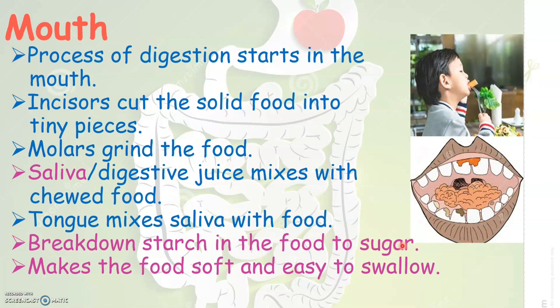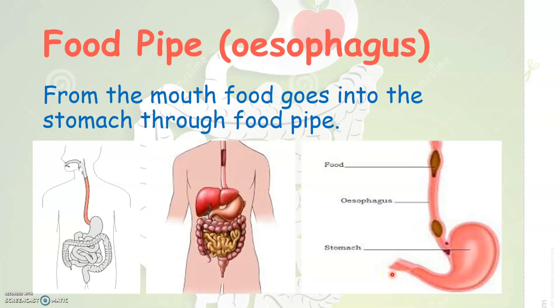We have already learned that only if the food is converted into a simple form can it be absorbed by our body. Saliva also makes the food soft so it can easily be swallowed. After we chew and swallow the food, from the mouth it goes through the food pipe. As you see in the picture, from the mouth the food goes into the stomach through the food pipe, otherwise known as the esophagus. Food that is chewed and swallowed travels through this food pipe to reach the stomach.